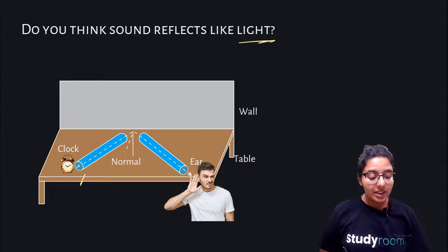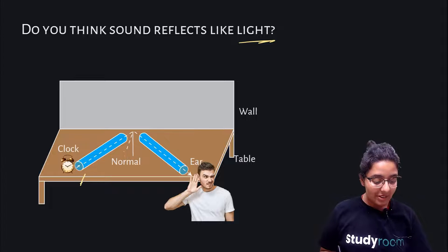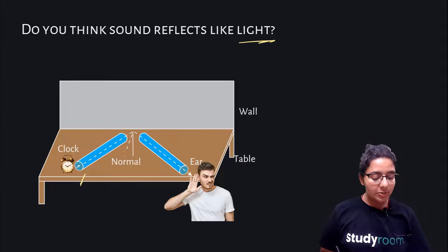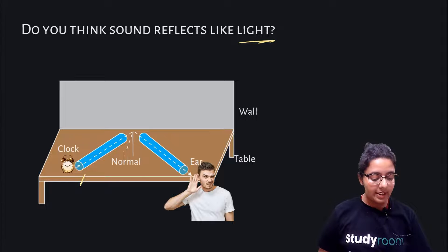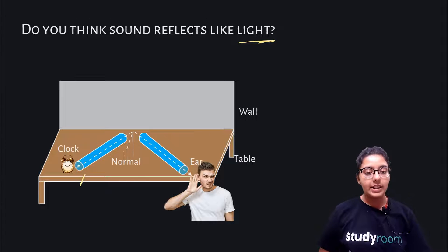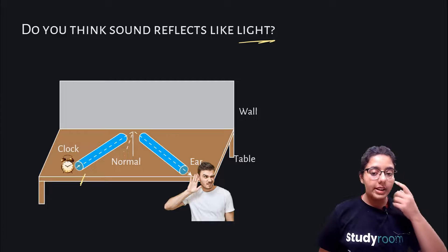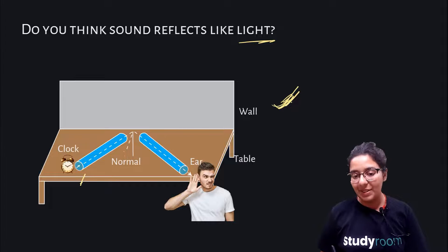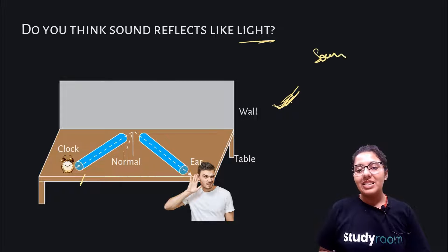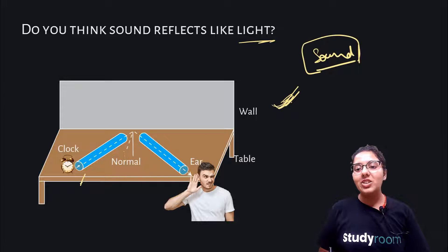Adjust the position of the pipe so that you can best hear the sound of the clock. Now measure the angles of incidence and reflection and see the relationship between the angles. Lift the pipe on the right vertically to a small height and observe what happens. In place of a clock, you can use a mobile phone or a tablet. Do this experiment and you will be really happy — it is such an interesting topic.